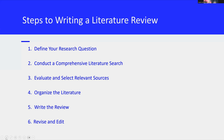Step six: revise and edit. Revise and edit your review to ensure clarity and coherence. Check that it adheres to academic guidelines and addresses your research question effectively. If you follow these steps, it will help you create a thorough and well-organized literature review.